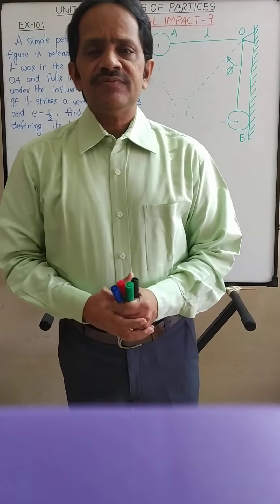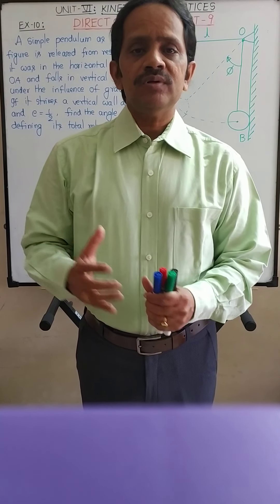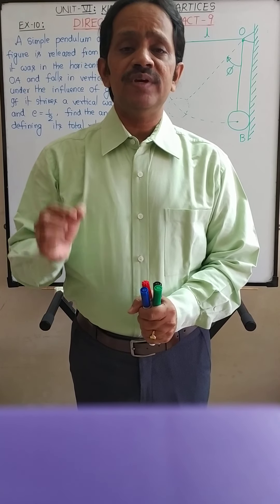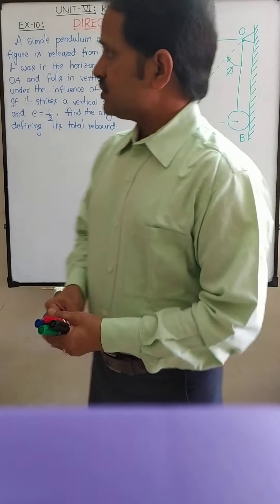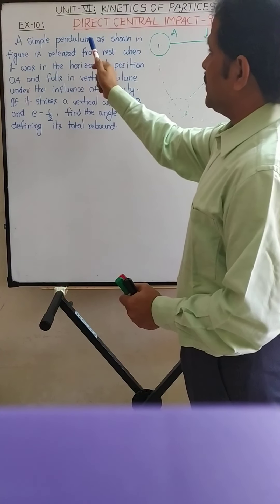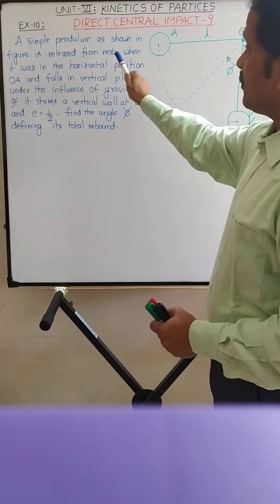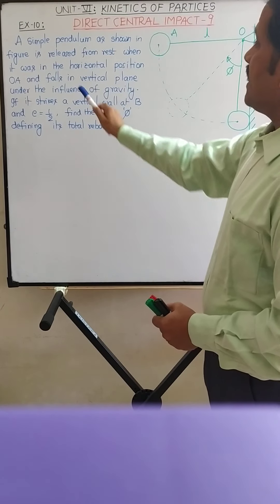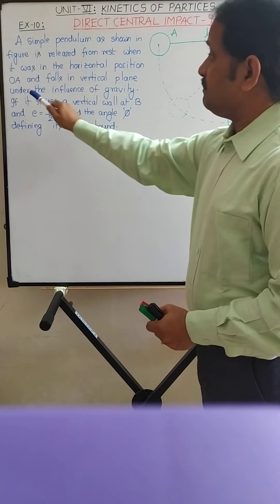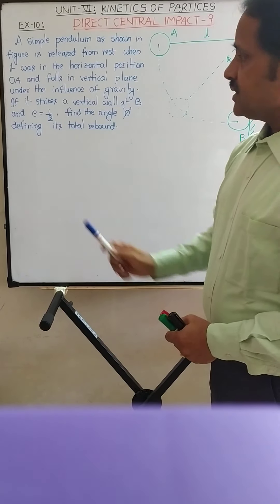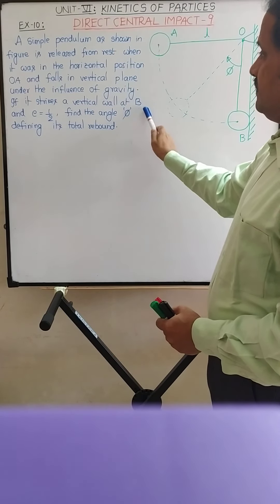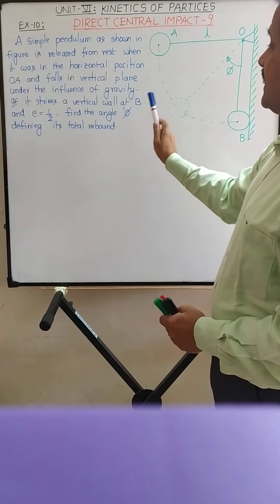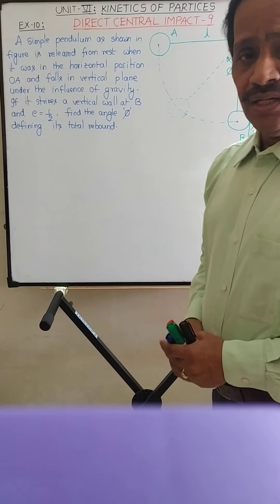Hello students, in this video we are going to solve one more example on the special case of direct central impact — that is, impact with a body of very large mass. In the problem, a simple pendulum as shown in the figure is released from rest when it was in the horizontal position OA, and falls in a vertical plane under the influence of gravity. If it strikes a vertical wall at B, and the coefficient of restitution e is equal to 1/2, find the angle φ defining its total rebound.